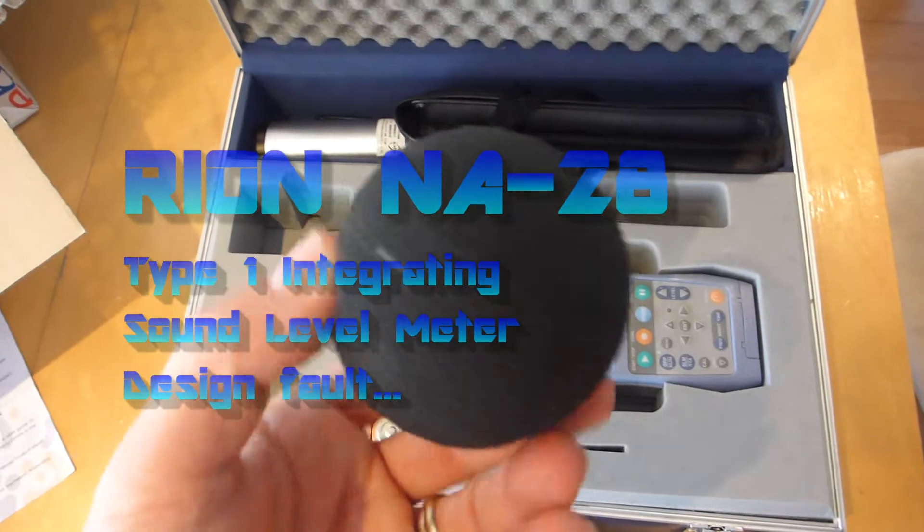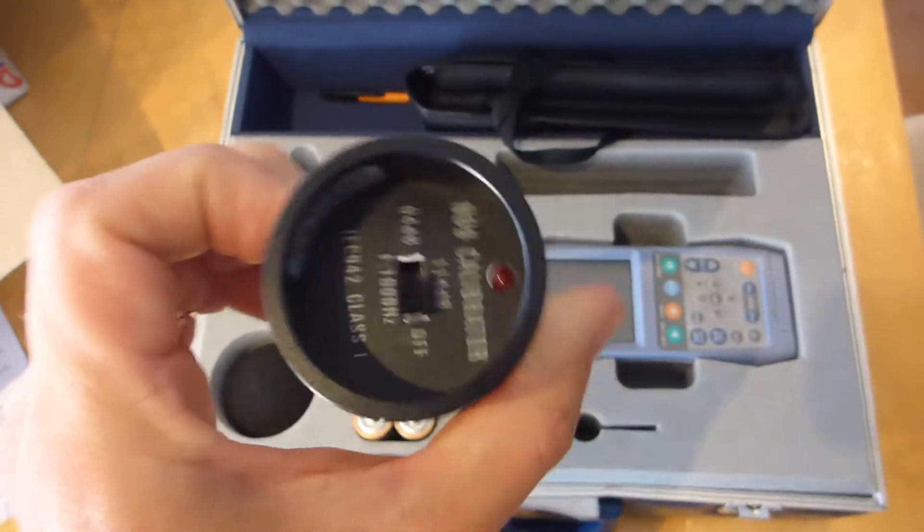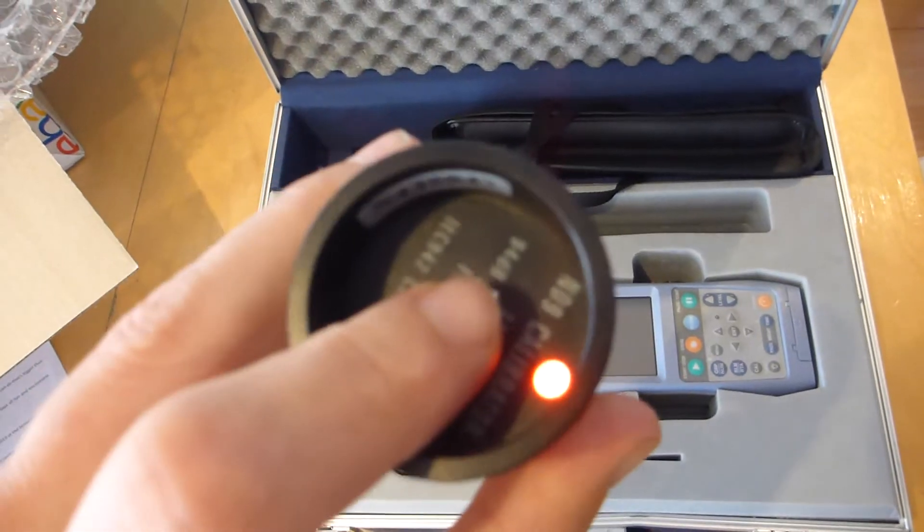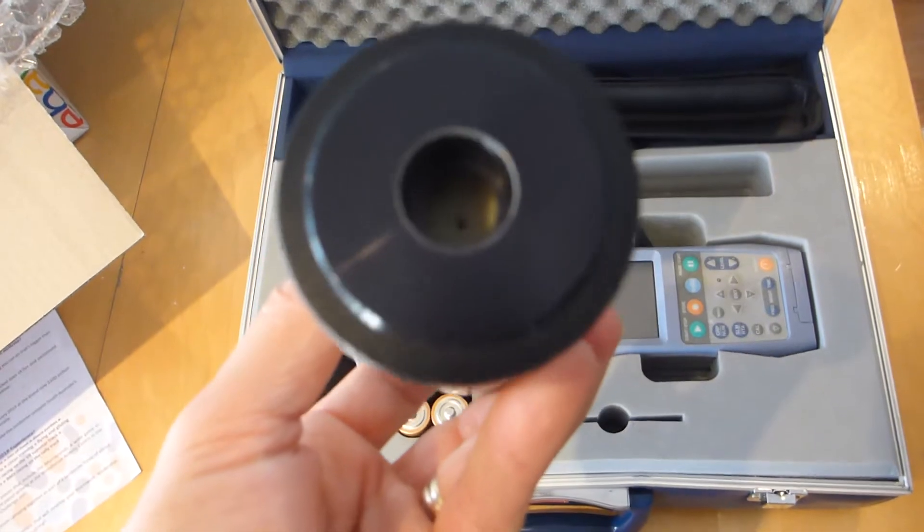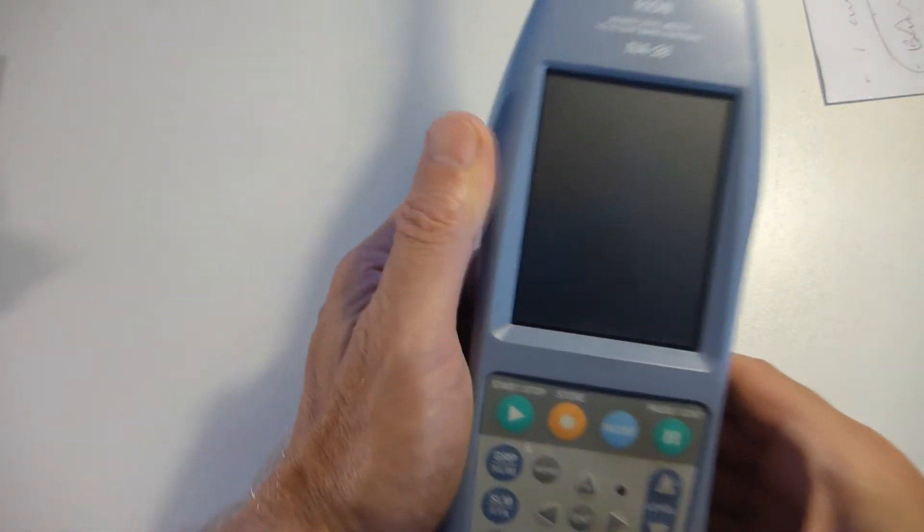If you're the proud owner of a Rion NA28 Type 1 integrating sound level meter, you will have come to love the new screen compared to the previous NA27 and the ability to do single octaves as well as third octaves in real time. However, there is a flaw, and I'll go through this with you.